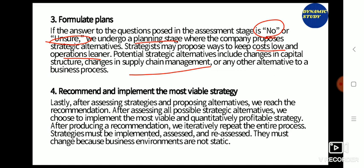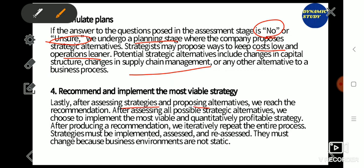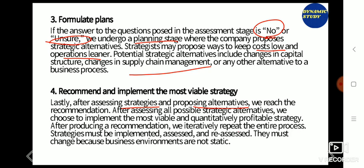The last process is to recommend and implement the most viable strategy. After accessing all strategies and proposing alternatives, we reach the recommendation stage. After assessing all possible strategic alternatives, we choose to implement the most viable and quantitatively profitable strategy — the best strategy from the alternatives that would bring success and profitability to the organization. After producing a recommendation, the entire process is repeated.